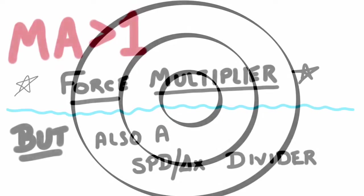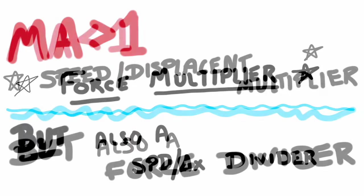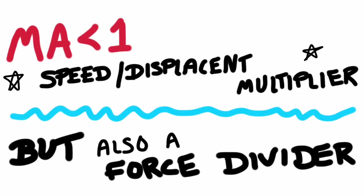Remember that the mechanical advantage is greater than one if it's a force multiplier — that's also a speed displacement divider. And if the mechanical advantage is less than one, it's a speed displacement multiplier, but unfortunately a force divider.